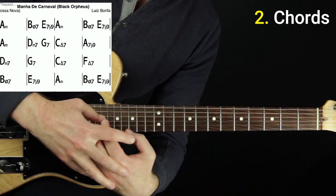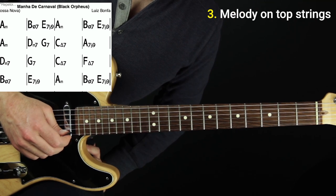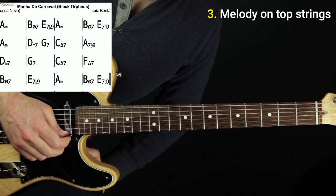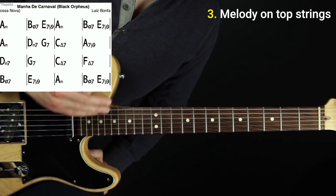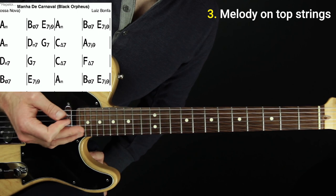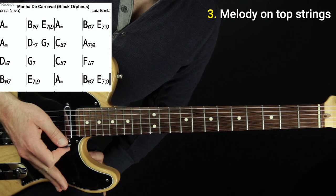We obviously need those two things to then put them together. Let's go to the next step here where we want to make sure that we have the melody outlined on the top string, top two strings, top three strings. Like the higher strings as much as possible.